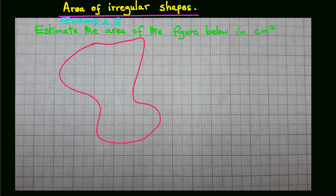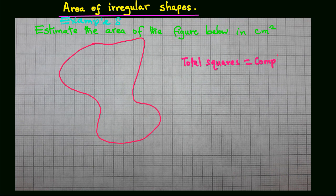Then we count all the incomplete squares, and the total number of squares is worked out from the formula, which is complete squares plus a half of incomplete ones.